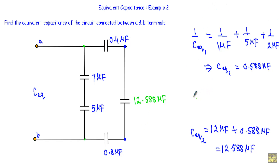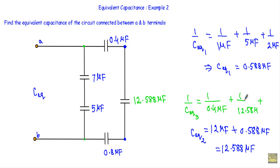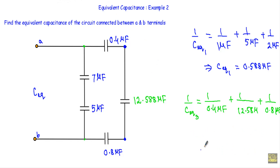I will denote the equivalent of the three series capacitors as C_equivalent3. Using the series formula: 1/C_equivalent3 = 1/0.4 µF + 1/12.588 µF + 1/0.8 µF. This gives C_equivalent3 = 0.261 µF. I will replace those three capacitors with 0.261 µF.